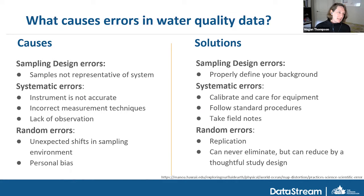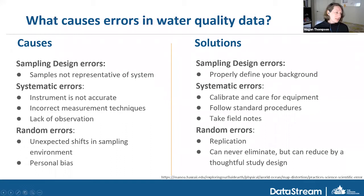If you are not precise and accurate, you end up with error in your water quality data. Error is not good, but to a certain extent unavoidable. There are different causes: errors related to your sampling design where samples may not be representative of the system, systematic errors from instruments not being properly calibrated or using the wrong measurement technique, and random errors that are very hard to remove — such as unexpected things happening in the environment that you were unaware of.